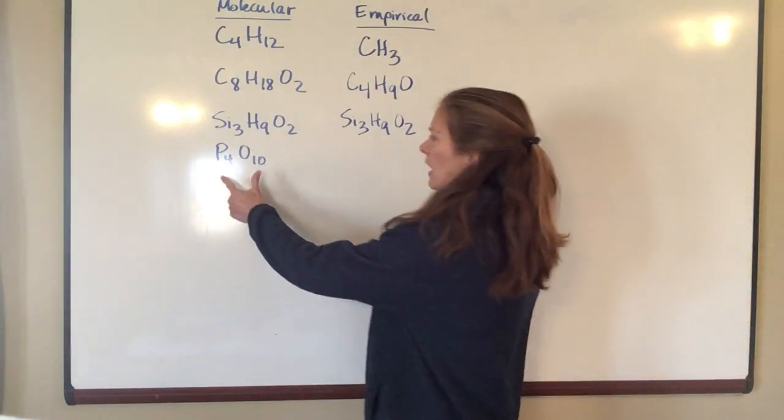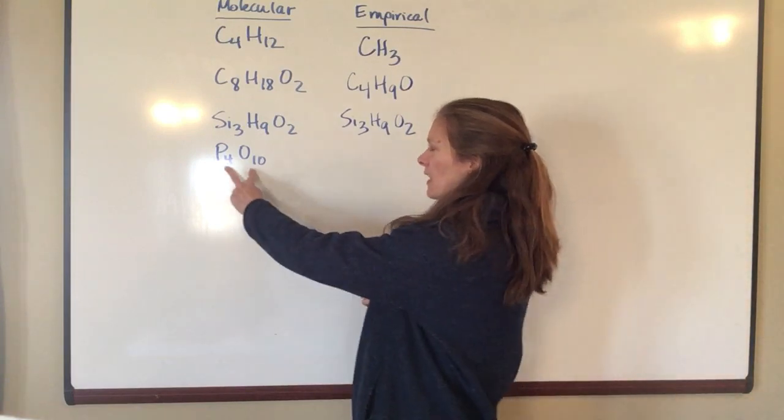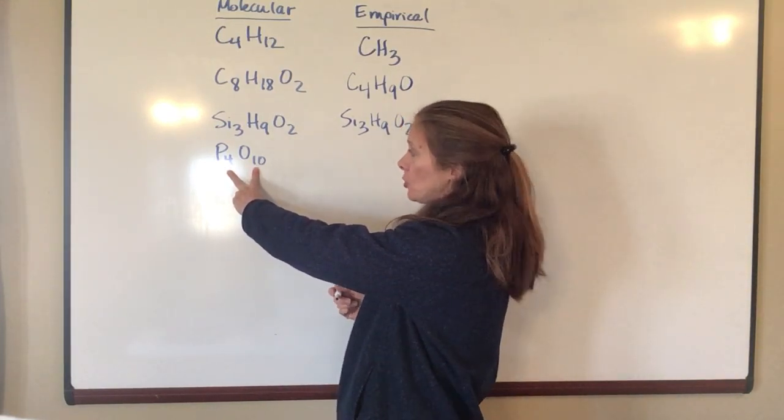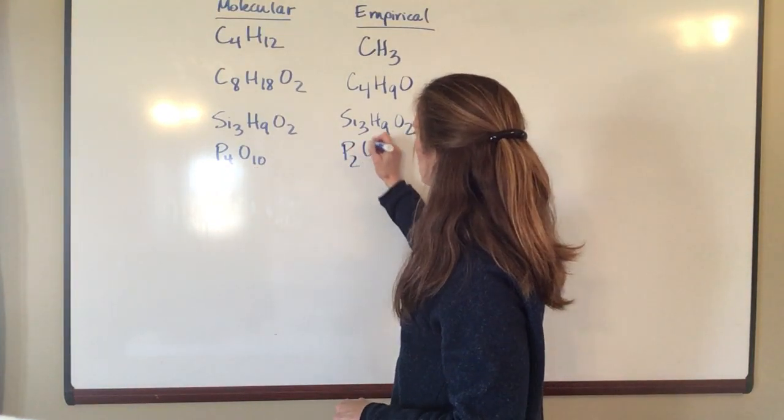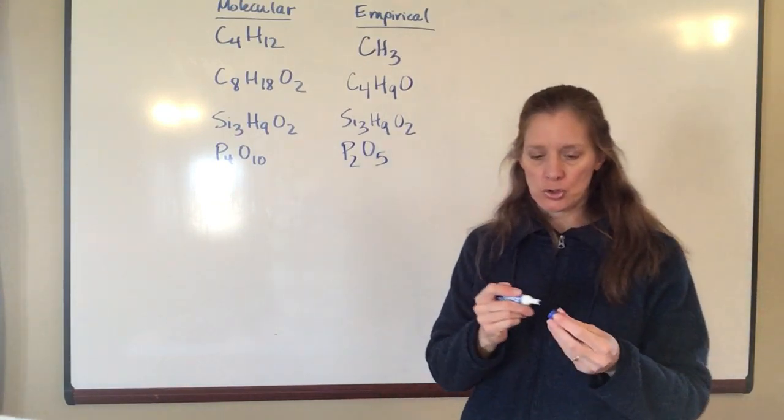Okay last one P4O10. Both of these are even numbers. I can divide both of them by 2. So if I divide 4 by 2, I get 2. If I divide 10 by 2, I get 5. So my empirical formula is P2O5.